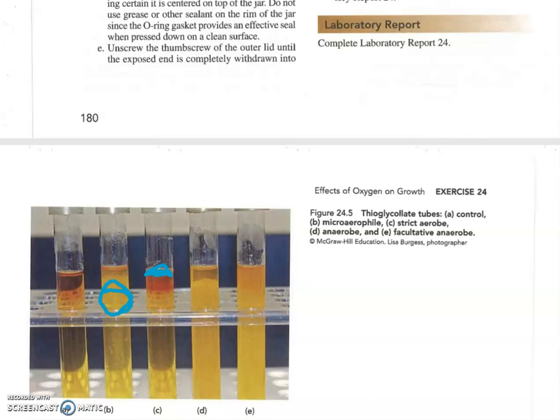And then on test tube number D, we have the anaerobe. They like to grow all throughout the medium right here. You can see growth from here to here. Just not real close to the surface because there's a little bit of oxygen up there and they can't take it.